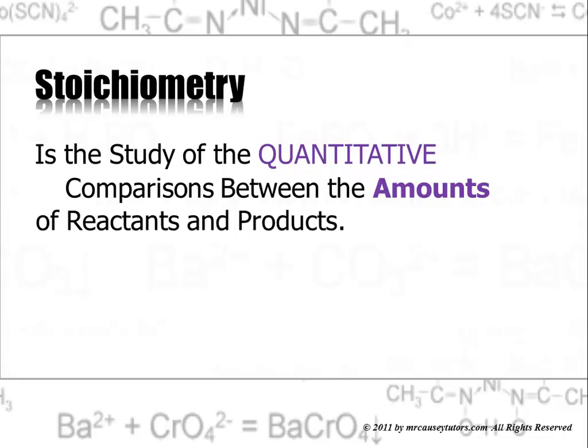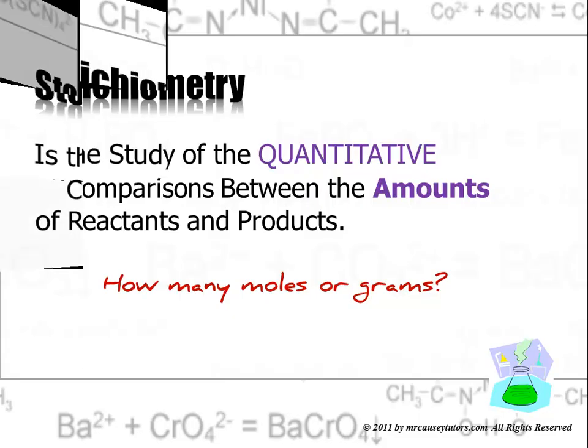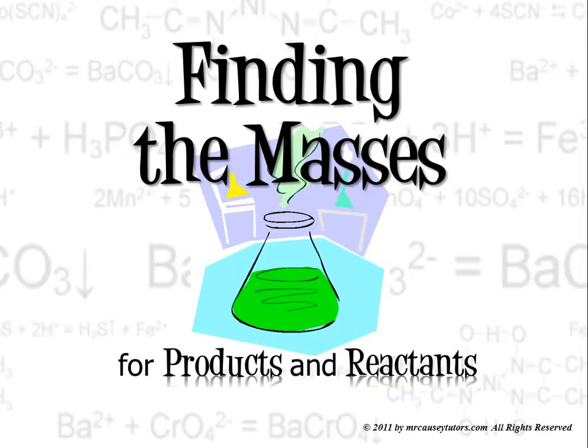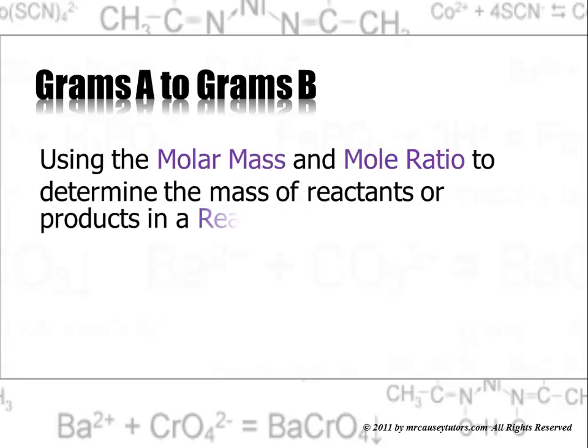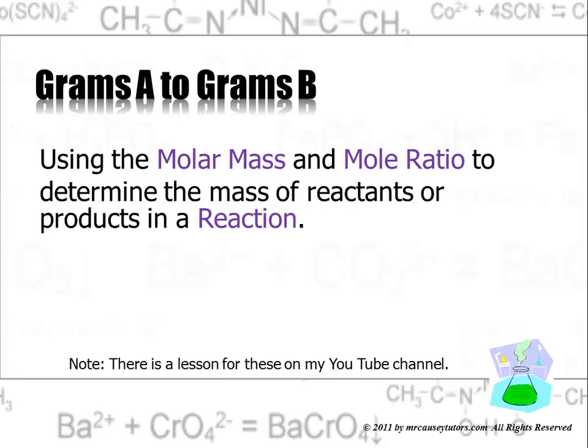Stoichiometry is the study of the quantitative comparisons between the amounts of reactants and products. Now, note that it's quantitative, not qualitative. This is numbers and it's math. So, we want to know how many moles or grams we're dealing with and we're going to use molar mass. We're going to use mole ratio to help us determine these things.